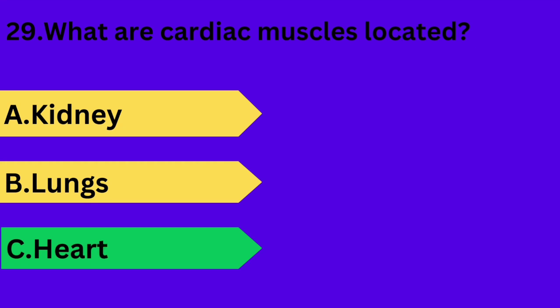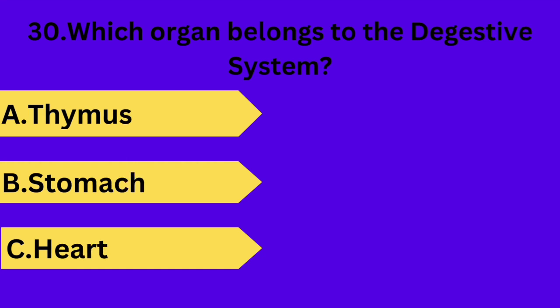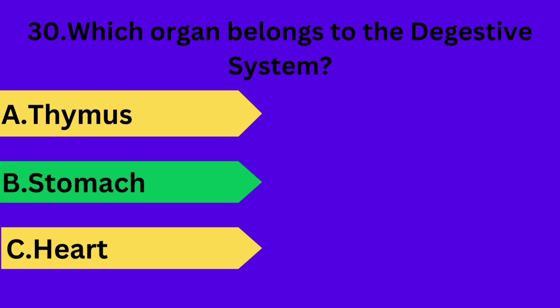And next question is: which organ belongs to the digestive system? Option A: thymus. Option B: stomach. Option C: heart. Your time starts now. Answer is option B: stomach.